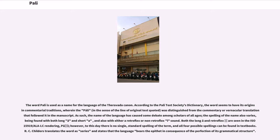The word Pali is used as a name for the language of the Theravada canon. According to the Pali Text Society's Dictionary, the word seems to have its origins in commentarial traditions, wherein Pali was distinguished from the commentary or vernacular translation that had followed it in the manuscript. The name of the language has caused some debate among scholars; the spelling also varies, being found with both long A and short A, and with either a retroflex or non-retroflex L sound. Both the long A and retroflex L are seen in the ISO 15919 rendering, however to this day there is no single standard spelling of the term, and all four possible spellings can be found in textbooks.